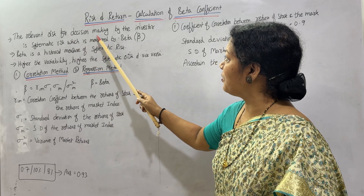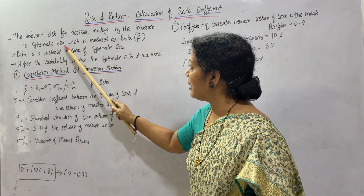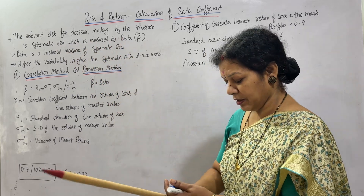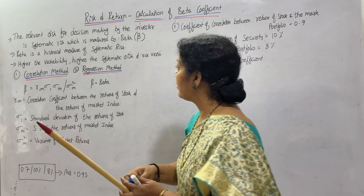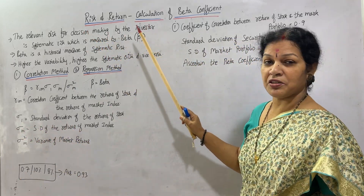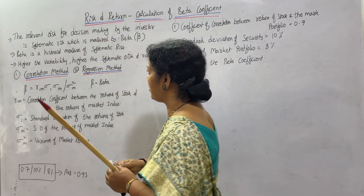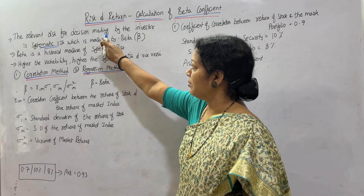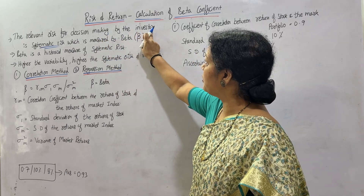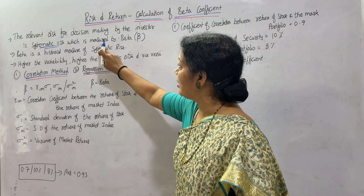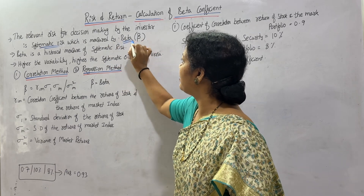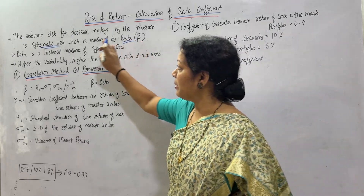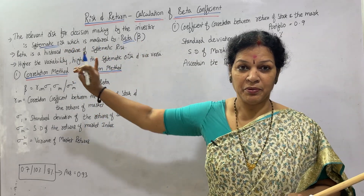The relevant risk for decision making by the investor is systematic risk. We are talking about systematic risk only. The risk which is going to be borne by the investor is systematic risk, which is measured by beta. What is measurable? Only systematic risk. That is point number one to be noted.